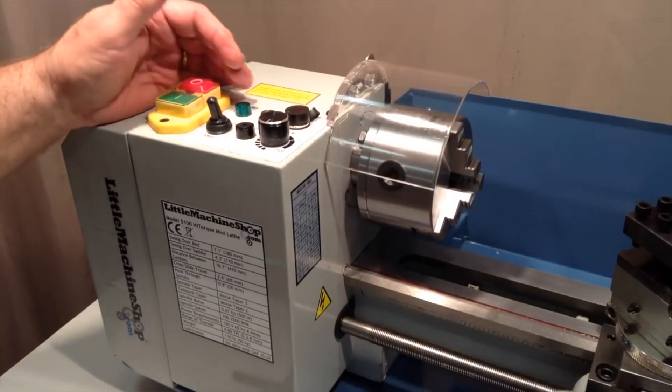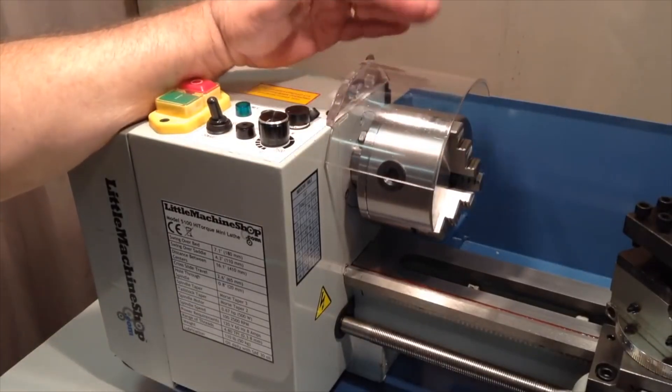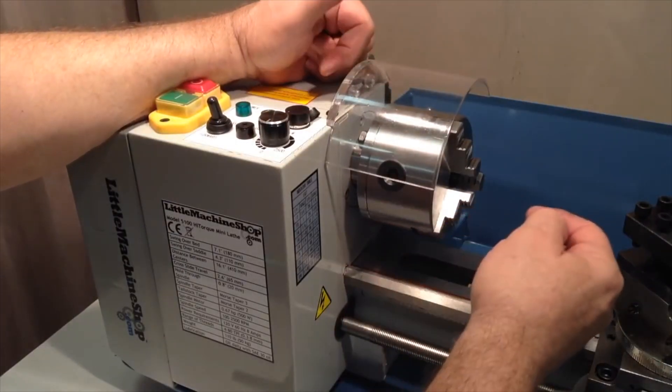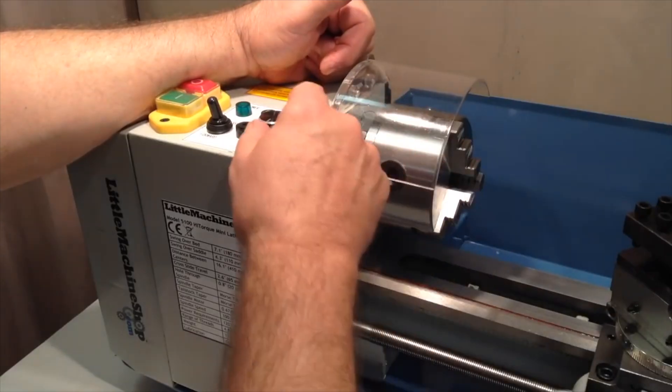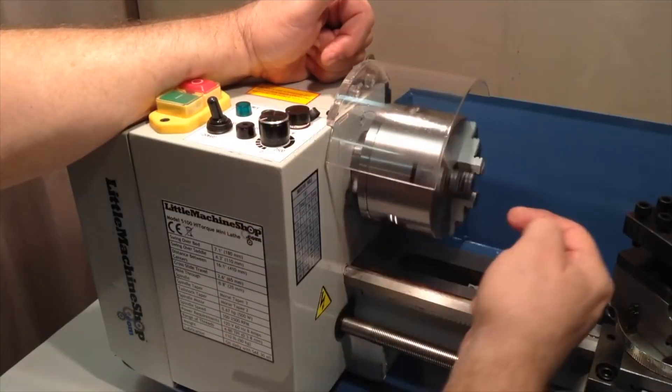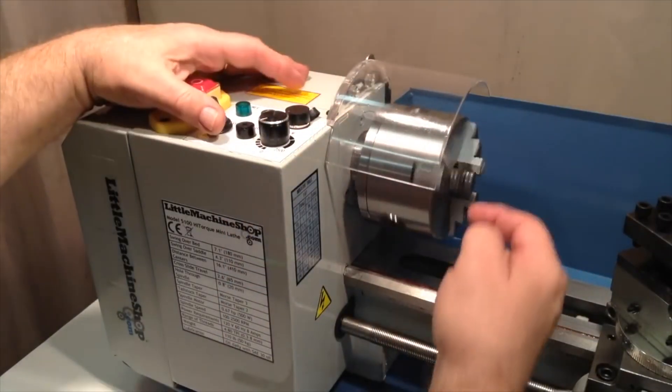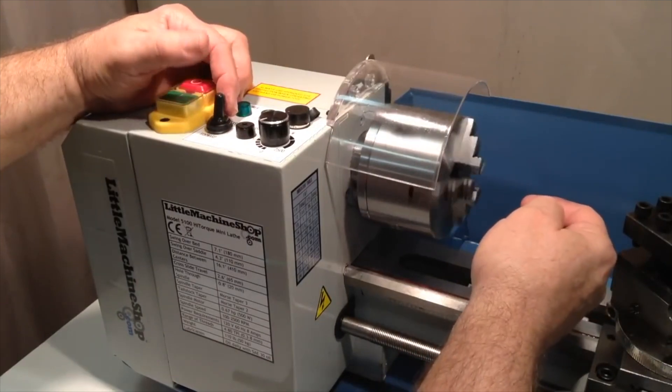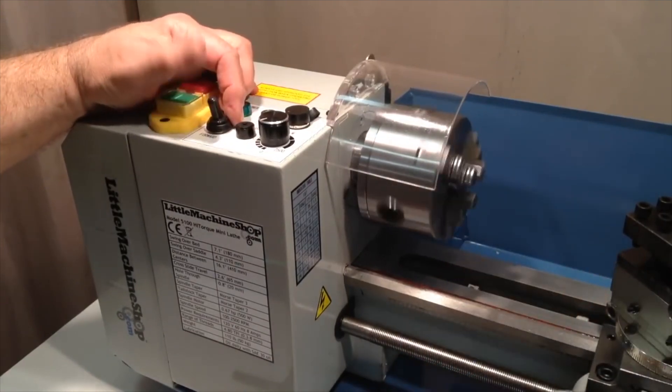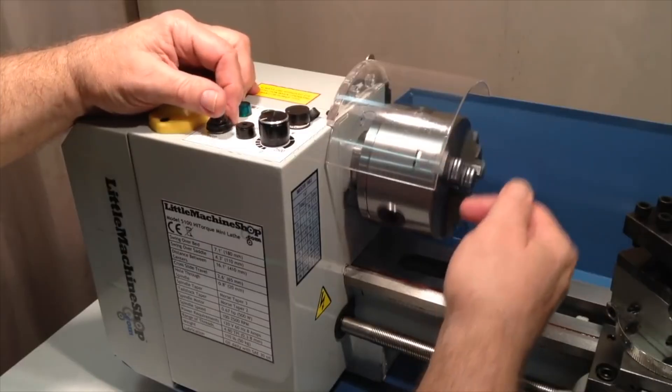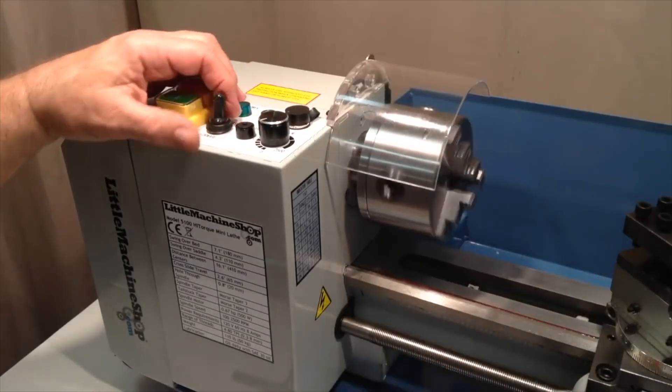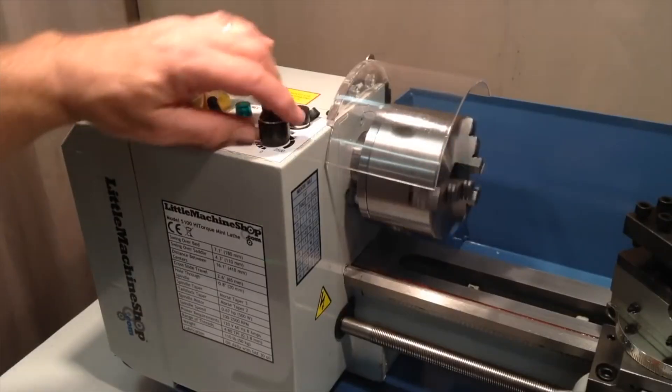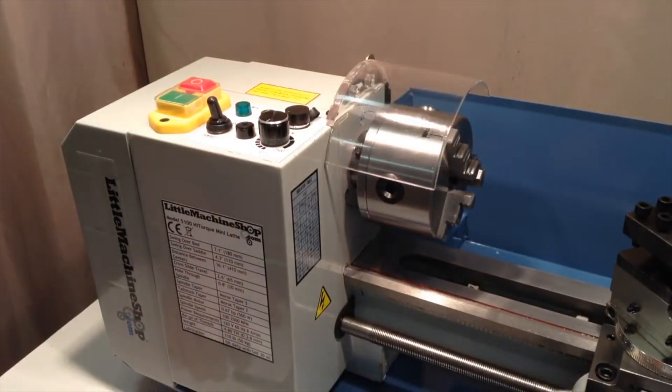Now about the only occasion I've had to use that, where it really helps, is during tapping operations, where you move the tap in very slowly at the slowest speed you can typically in the forward direction, and then reverse the chuck to back the tap out to clear the chips. Go back in the forward operation to draw it back in and repeat a few times as necessary, depending on how deep and how big the hole is you're tapping. But that's a great convenience feature when doing a tapping operation.